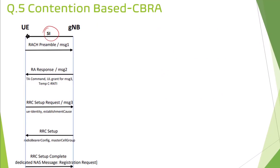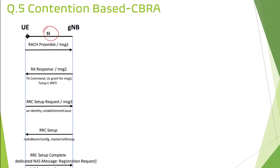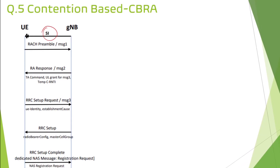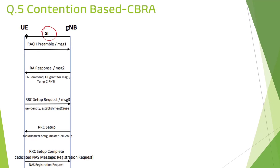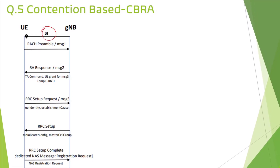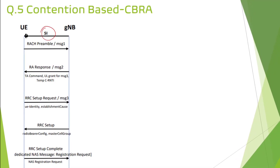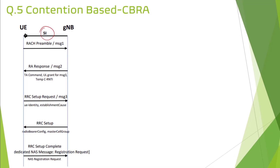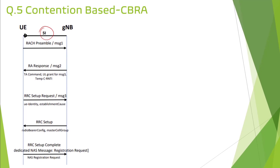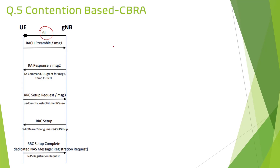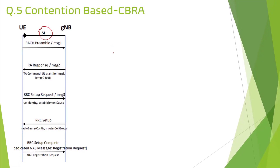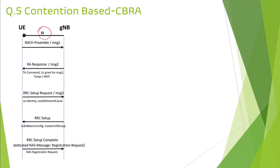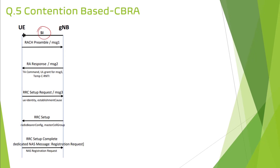The gNodeB sends the SI (System Information) message. I have already discussed the system information message — when a mobile comes to the network it starts listening to the network, and based on the signal strength it selects the nearest base station. The gNodeB broadcasts the system information message, the UE listens and reads those messages and acts accordingly. Initially the UE doesn't have an idea about when and where it needs to send the PRACH for uplink synchronization and uplink grant, so the gNodeB broadcasts the system information message for the UE to figure out where and when to transmit the RACH request.